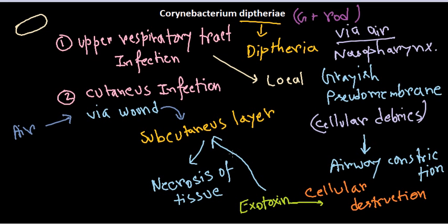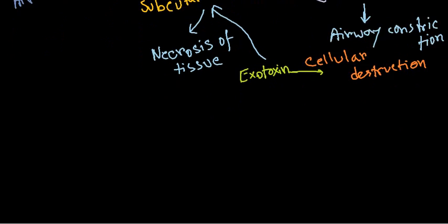Once inside the subcutaneous layer, the bacterium starts secreting the exotoxin, and the secretion of this exotoxin leads to the destruction and necrosis of tissue in this layer. These are the different stages of diphtherial poisoning, and now we will talk about the pathogenicity carried out by Corynebacterium diphtheriae.